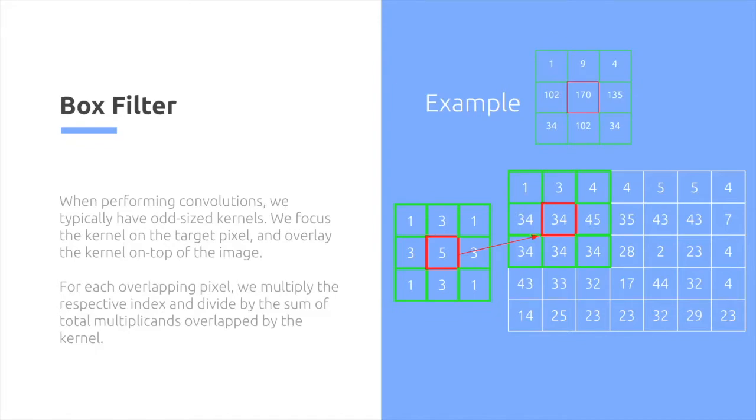Then we take all the neighboring points, and then we overlap this on top. We get the matrix to the top right. In order to get that matrix, we simply multiply each respective index.